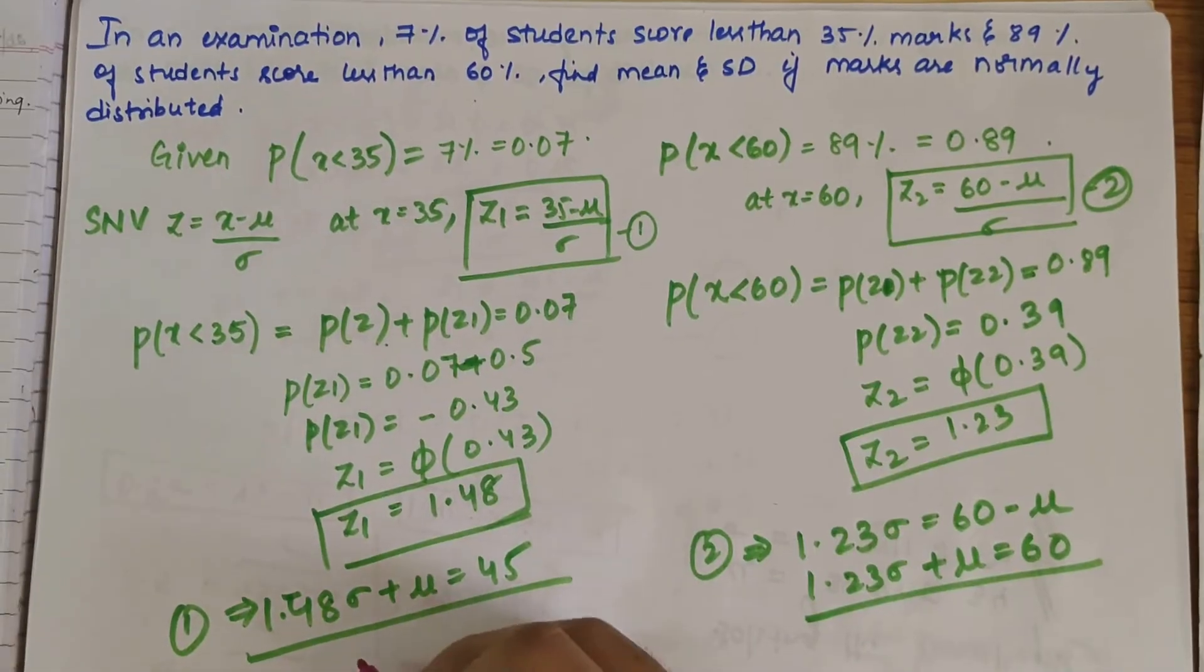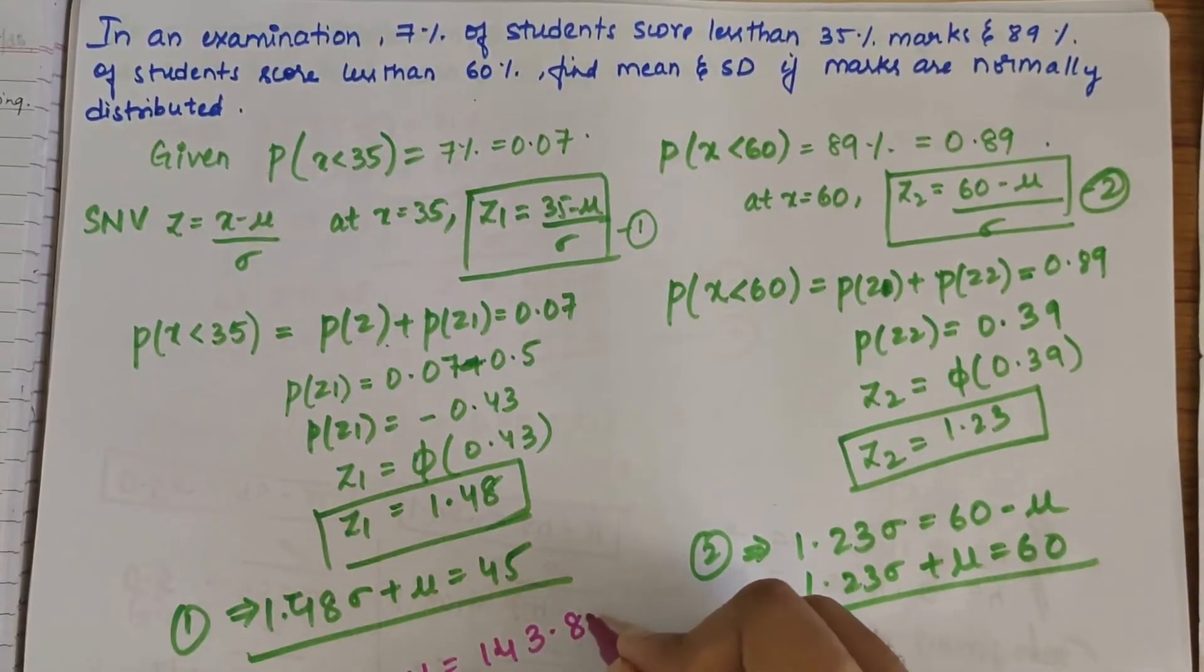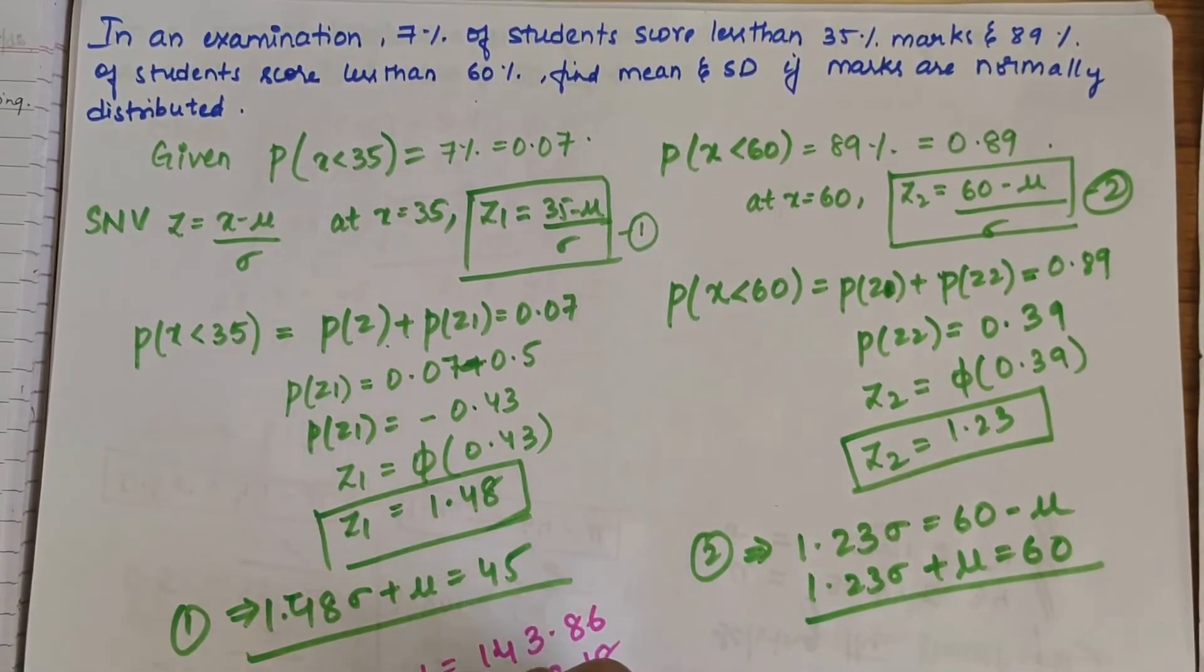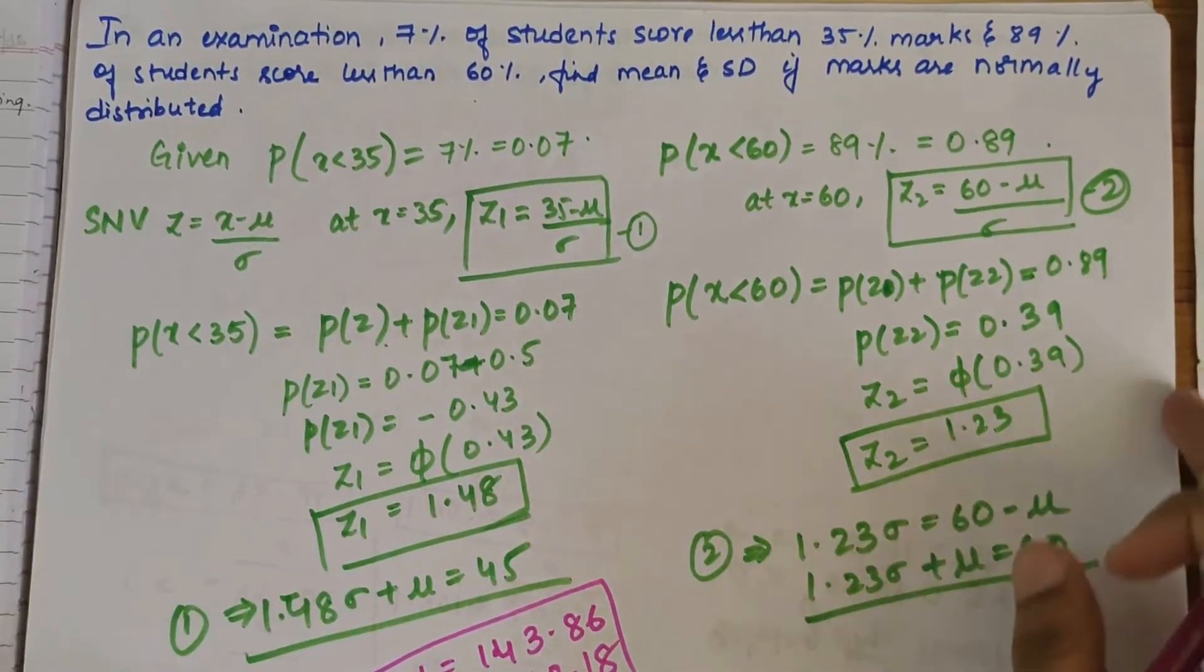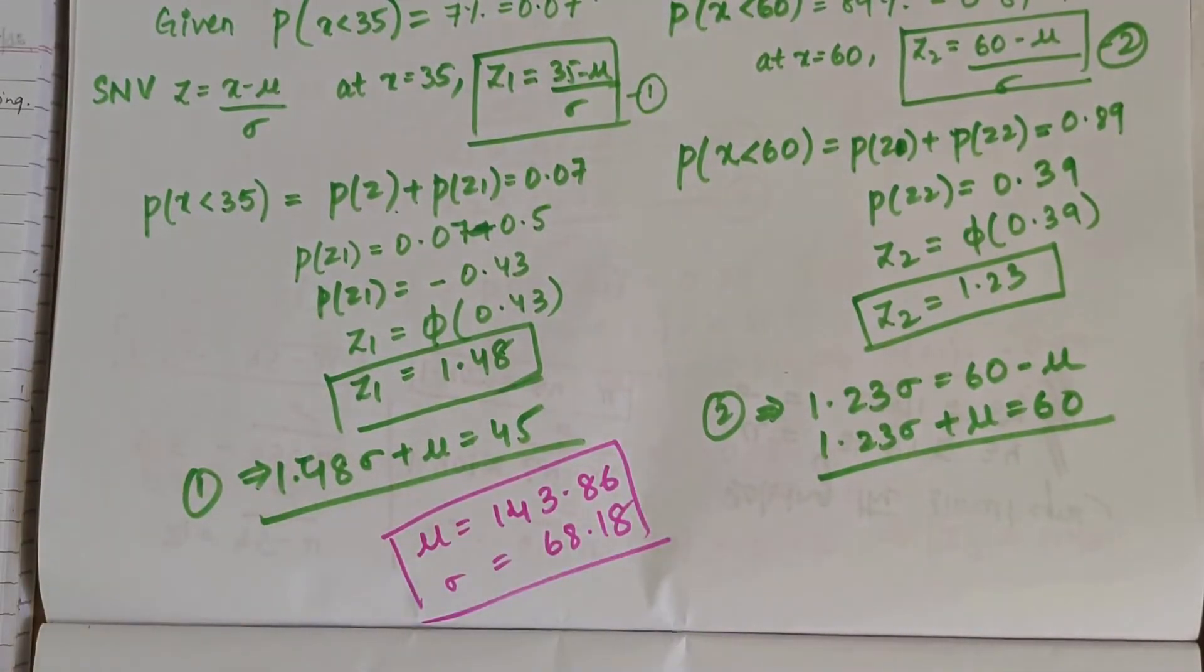Solving the two simultaneous equations, you'll get the mu value as 143.86 and sigma value is 68.18.